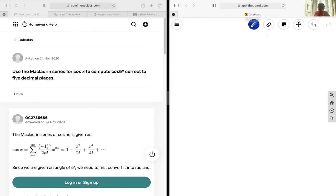Okay, next up we want to find the Maclaurin series for cos(x) to compute cos of five degrees correct to five decimal places. So let's write the general formula for the Maclaurin series, and that is the summation